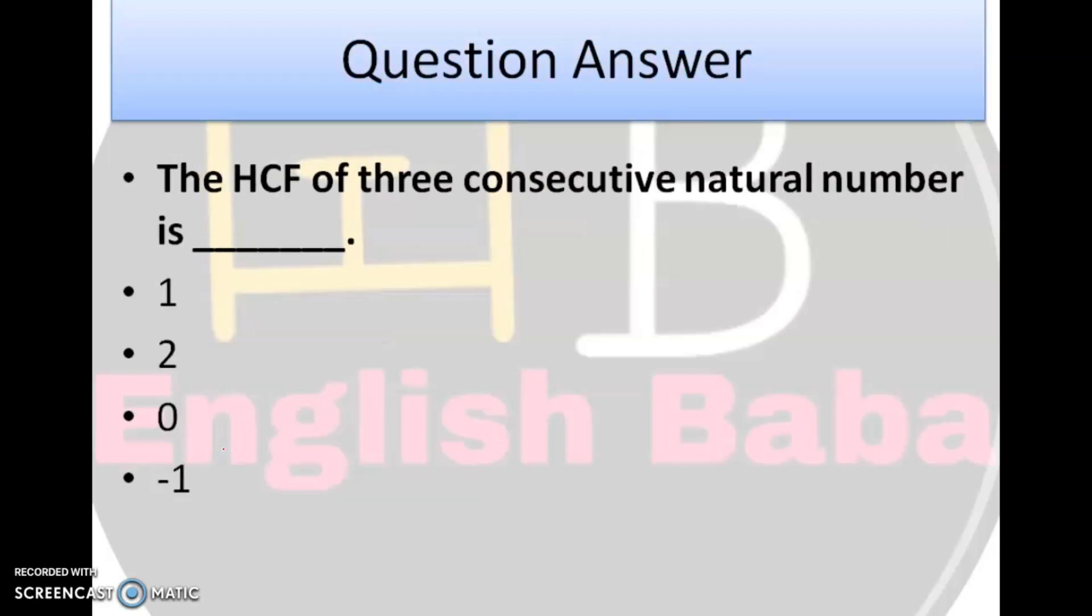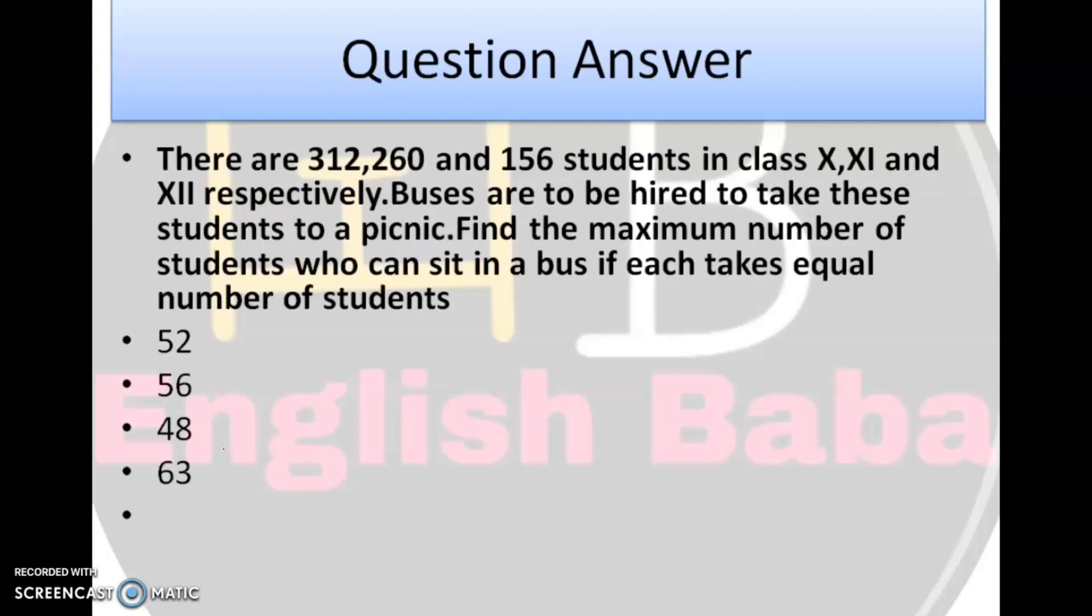Question number 3. The HCF of 3 consecutive natural numbers is 1, 2, 0, minus 1. Uthaye pen, eejye solve, you will get the answer as 1. Next question.